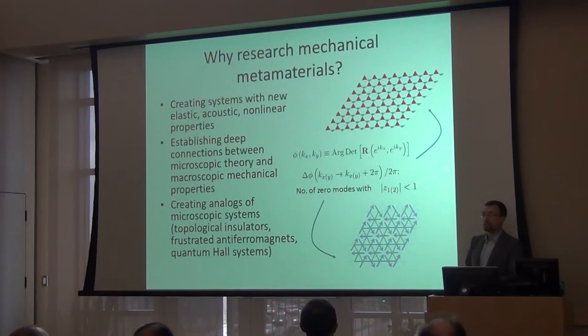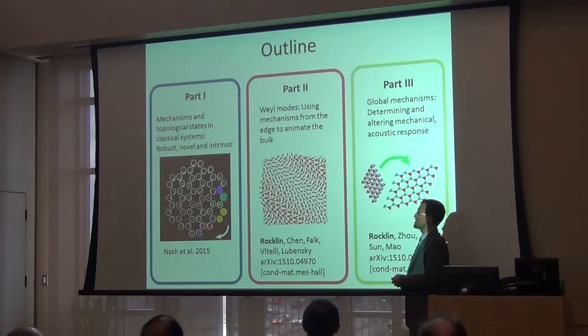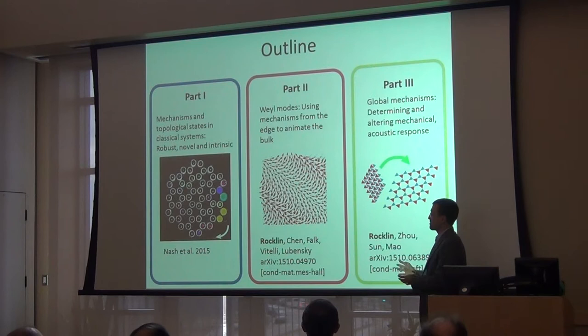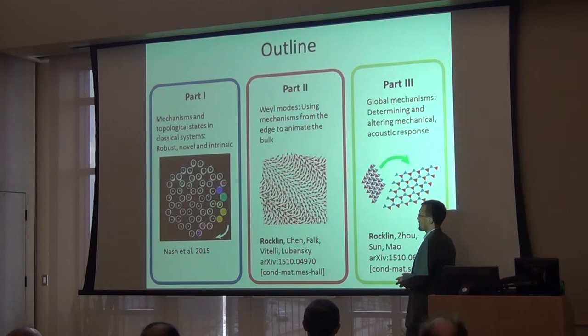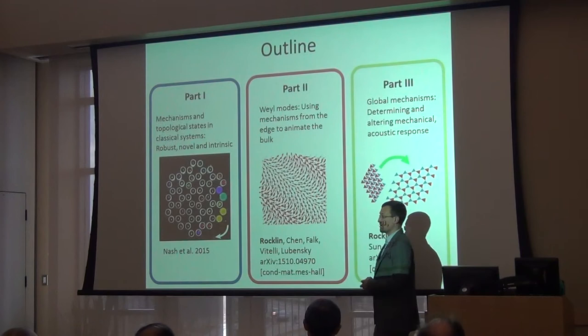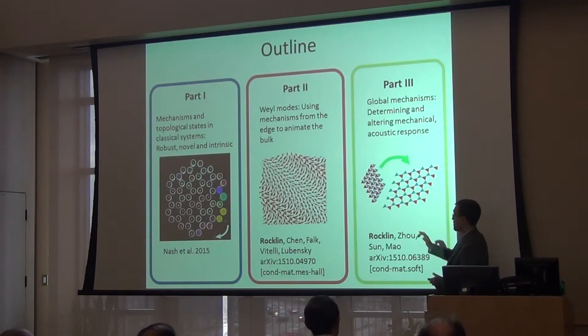In this talk I'll introduce mechanisms and topological states in classical systems, and show how we can use topology to create robust, novel, and intrinsic mechanisms. In part two, I'll introduce classical lattices with a special property — we'll be talking mostly about isostatic lattices. In these lattices, whenever you remove a bond you create a zero mode, unlike a regular stable crystal. These lattices have the special property that you can create bulk modes that allow you to transform the bulk, not just the edge. In part three, I'll go from a lattice with a pre-programmed mechanical response to a lattice where we can use a global mechanism to transform it and change its mechanical properties.